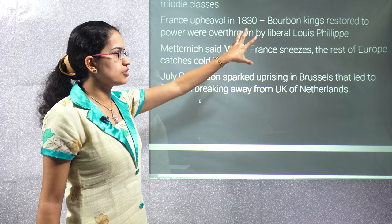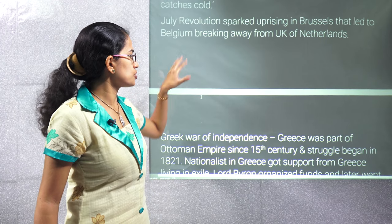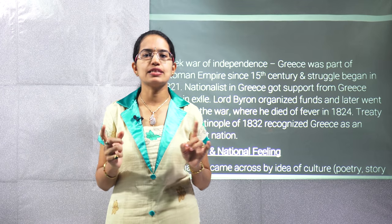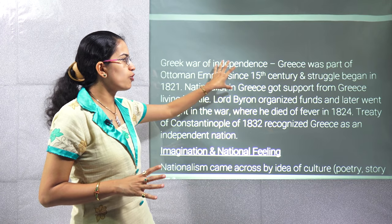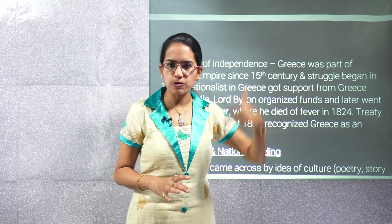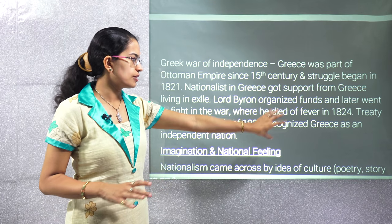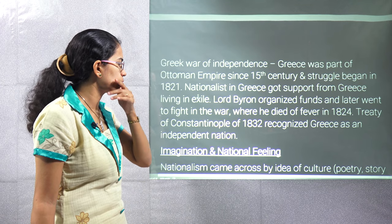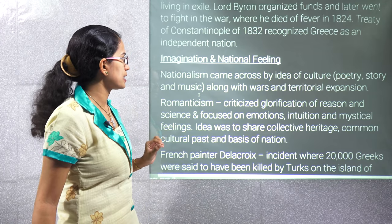After Louis-Philippe came to power, the July Revolution sparked up. This July Revolution not only affected France but affected neighboring countries as well. As a result, in Greece you had the war for independence, and this war was supported by people living outside Greece who belonged to Greece. Finally, the Treaty of Constantinople was signed and Lord Byron organised the fund for that. Lord Byron died of fever in 1824, and finally in 1832, Greece was declared an independent nation.